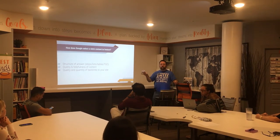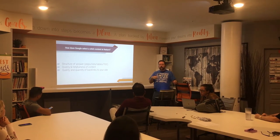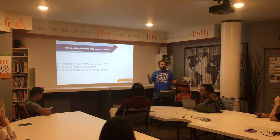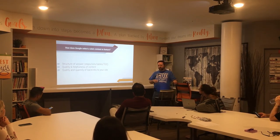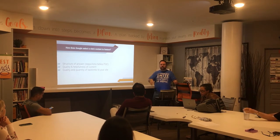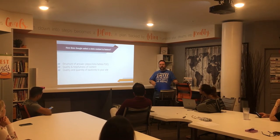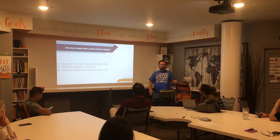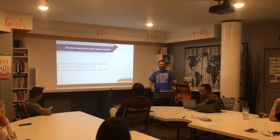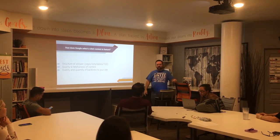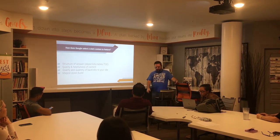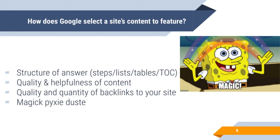Quality and helpfulness of the content is important — if it's not helpful it won't show up. Quality and quantity of backlinks matter: the more backlinks you have, the more authoritative your site is. Cornerstone content pages count a lot. I accidentally wrote one on my site about removing Jetpack — I consistently rank on page one for 'remove Jetpack.' And then there's magic pixie dust — you just never know when you're going to show up. There's a little element of surprise in the algorithm.